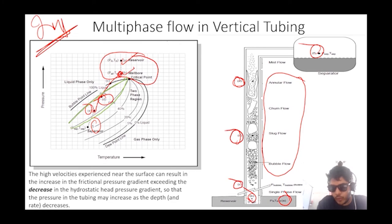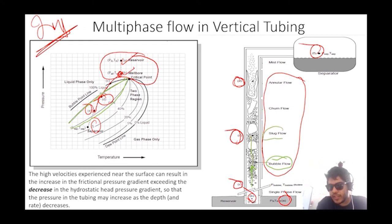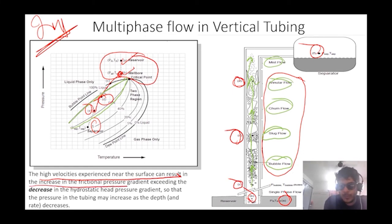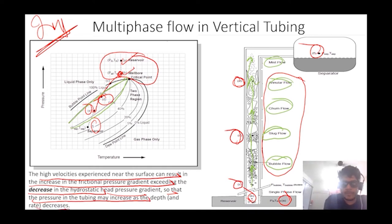The theory states: high velocities experienced near the surface can result in an increasingly large frictional pressure gradient exceeding the decrease in hydrostatic head pressure gradient, so that pressure in the tubing may increase as depth decreases. Bubble flow occurs at relatively low liquid rates. In slug flow, the gas phase acts like a large bullet-shaped gas pocket with diameter nearly equal to pipe diameter, termed a Taylor bubble. Gas slugs act as an efficient mechanism to lift liquid to the surface.